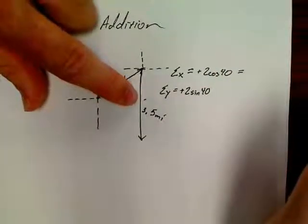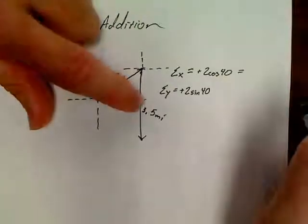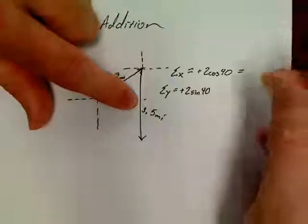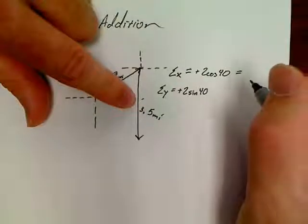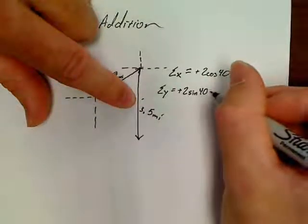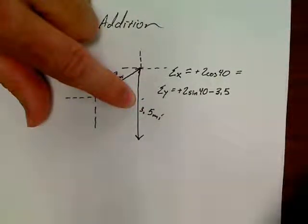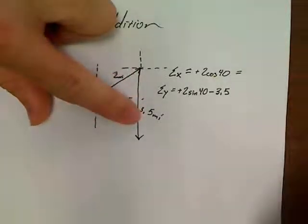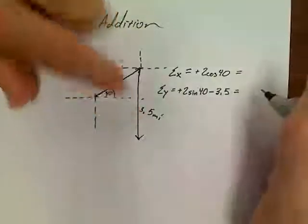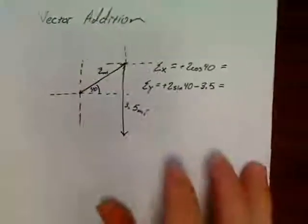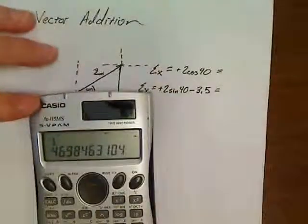The second vector has a y component. Matter of fact, it's completely in the y direction. But it's in the negative y direction. So, when we write it down, we'll write negative 3.5. No sine or cosine required, because it's due south. So now, let's sum up these x's and y's.